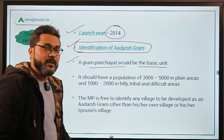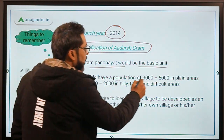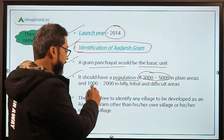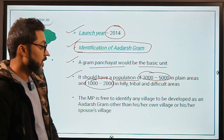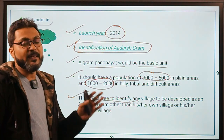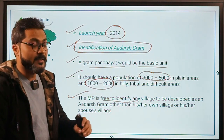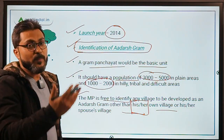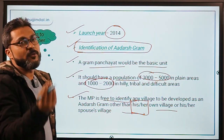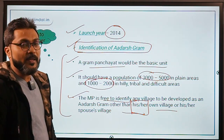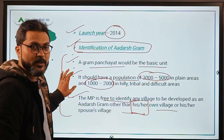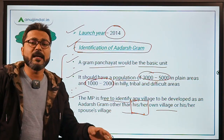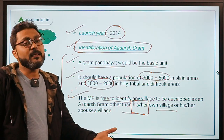A Gram Panchayat would be the basic unit. It should have a population of 3,000 to 5,000 in plain areas, while for hilly, tribal, or difficult areas, the population should be between 1,000 and 2,000. The MP is free to identify any village to be developed as an ideal village, but that village should not belong to the MP's own village or that of their spouse. These are the three conditions for identification of an Adarsh Gram.